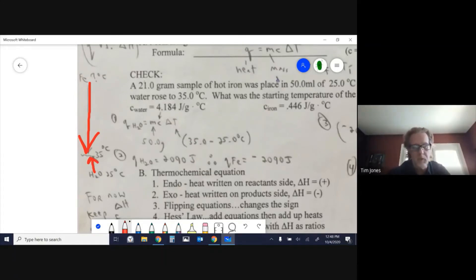There are two assumptions you need to make. First, the two things will keep changing temperature until they meet in the middle, which is 35°C. Assume the iron completely cooled down. Second, however much heat went into the water must have come out of the iron.